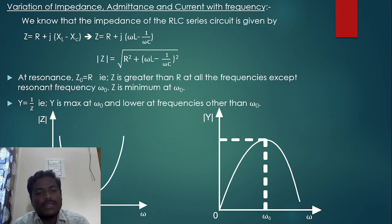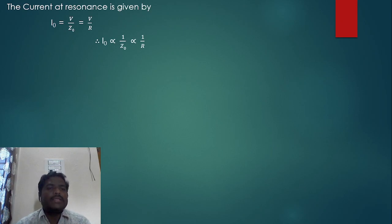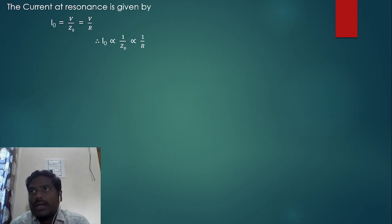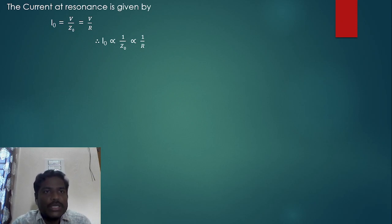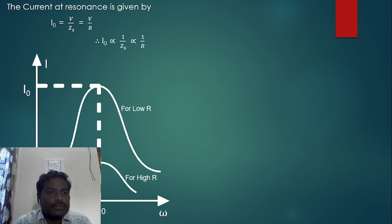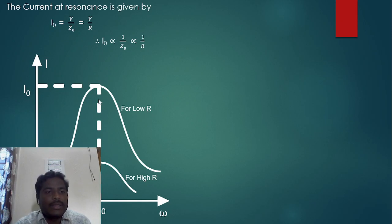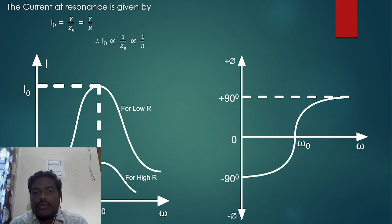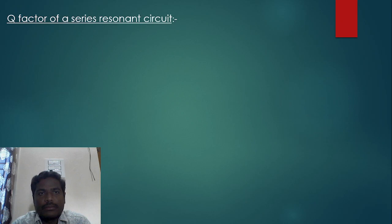Current I = V/Z, so current is inversely proportional to impedance. At resonance, current is maximum (since Z is minimum). For higher values of R, the peak current is lower; for lower values of R, the peak current is higher. The phase angle variation with frequency is also shown, transitioning from capacitive to inductive behavior around the resonant frequency.